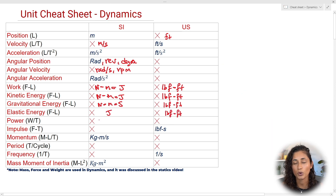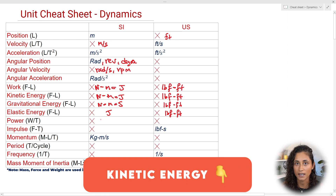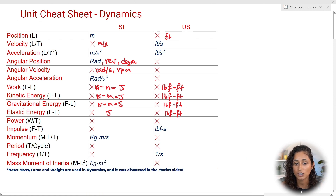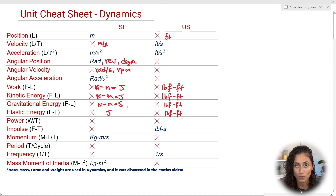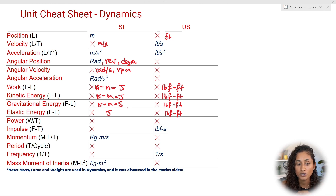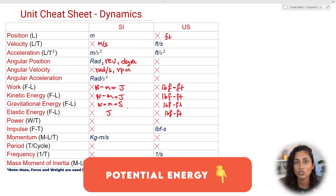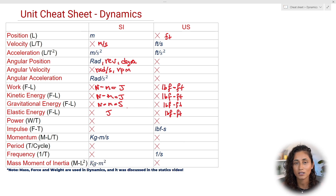If you want to see an example where we calculate kinetic energy, comment 'kinetic energy' below. Next we have potential energy, which includes gravitational and elastic energy. These have units of joules for SI and pound-force foot for US — the same as work. Try deriving the units for gravitational and elastic energy from the equations in the FE reference handbook, just like we did with kinetic energy, and be careful with US units. Comment 'potential energy' below and I'll make a video so you can check your answers.